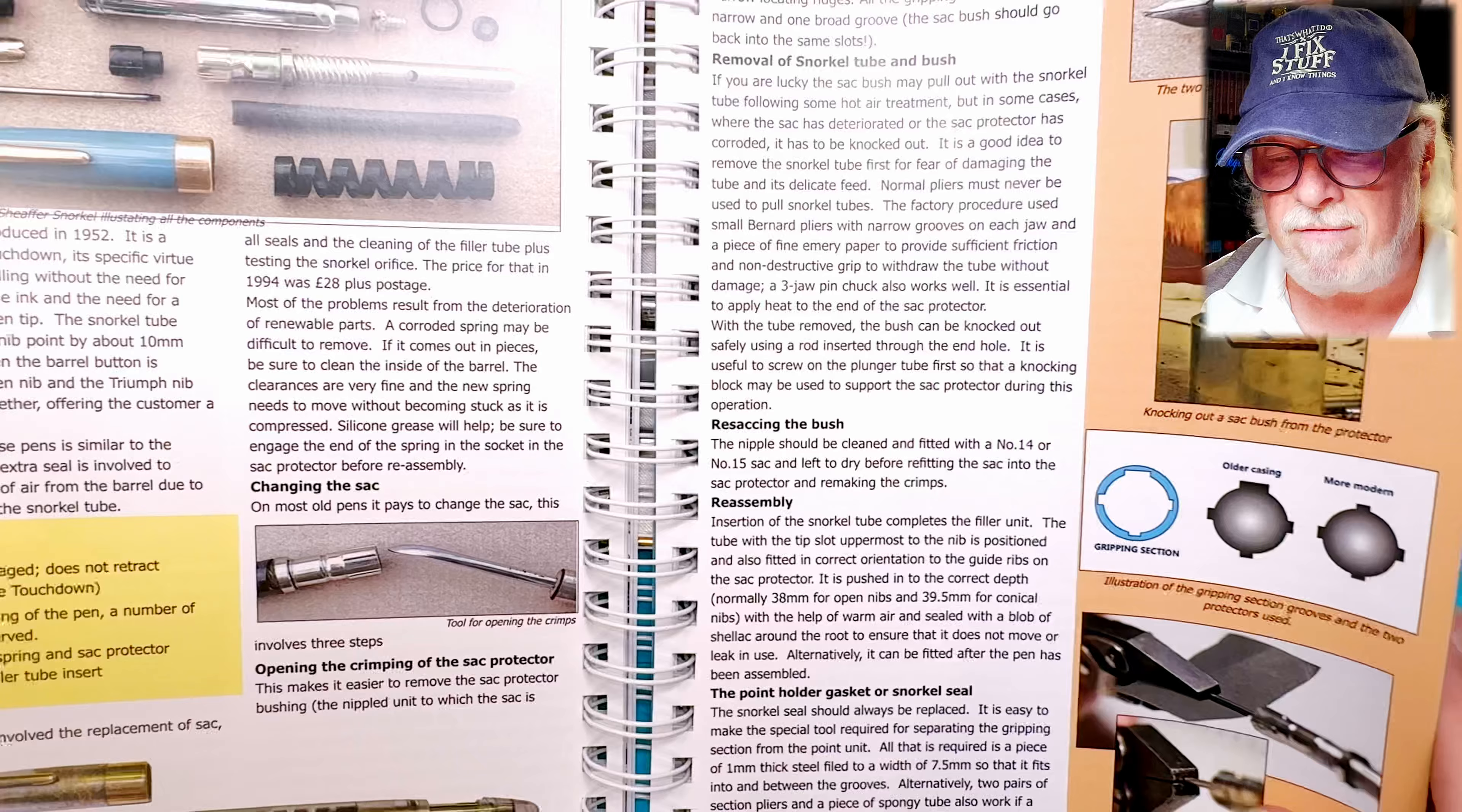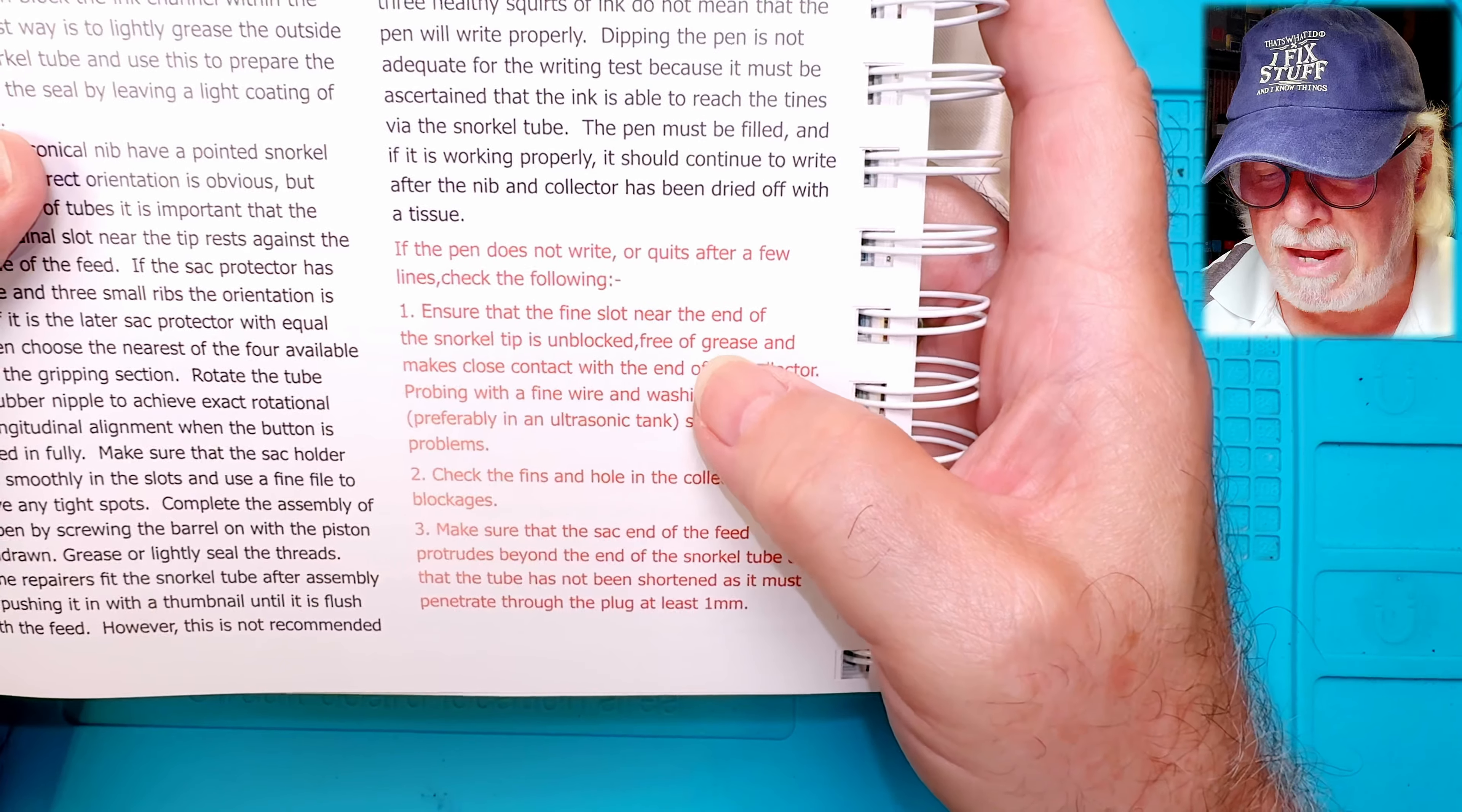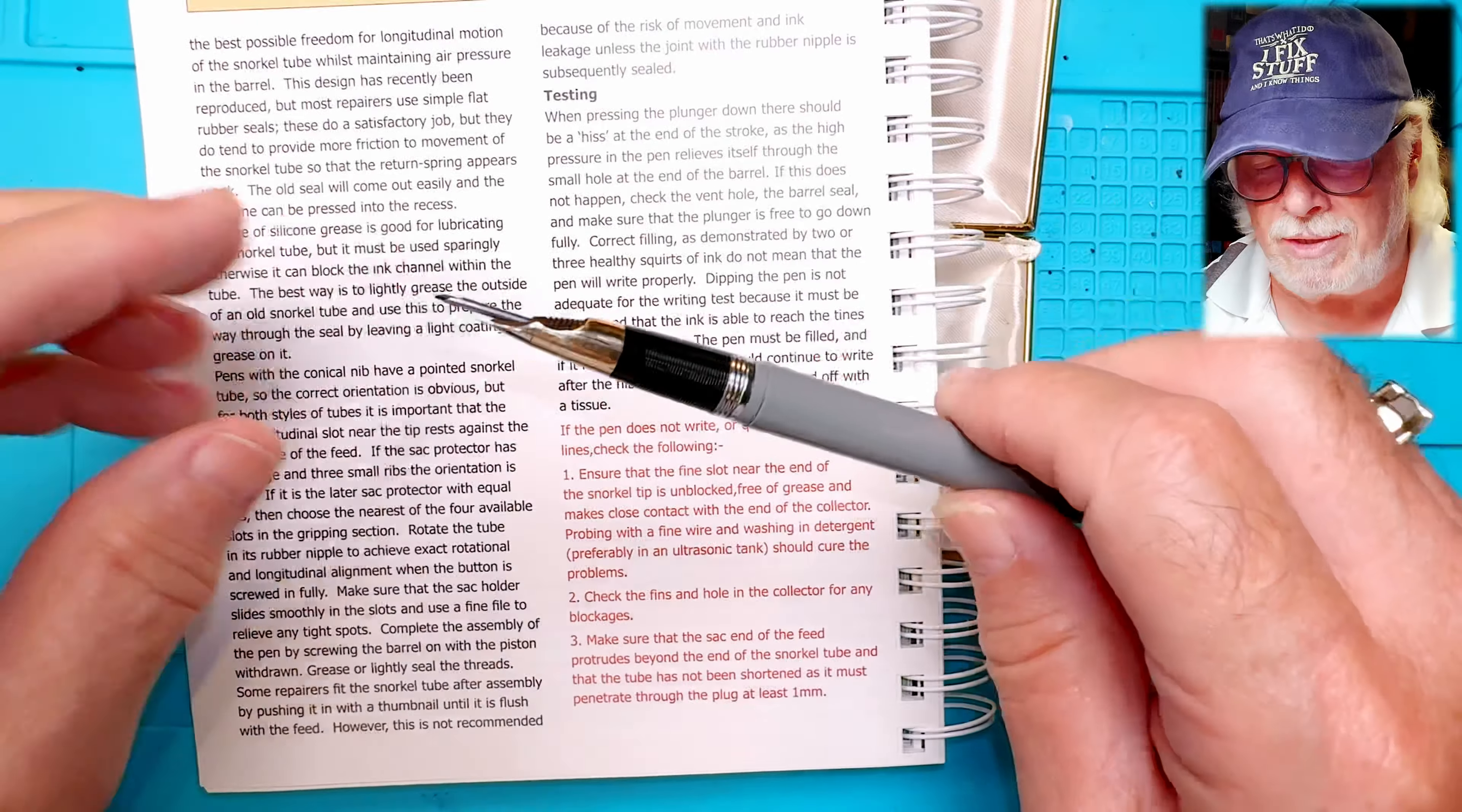And there's a whole section here on the Schaefer's Snorkel. All the different parts and the ways to restore it. And I particularly found this page the most interesting because there's some red section that says if the pen does not write or quits after a few lines, check these following things. They want to make sure that the fine slot near the end of the snorkel tip is unblocked, free of grease, and makes close contact with the end of the collector. Probing with a fine wire and washing in detergent, preferably an ultrasonic tank, should cure the problems. Well, let's take a look at that.